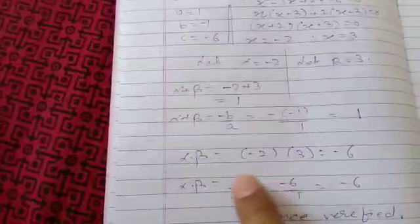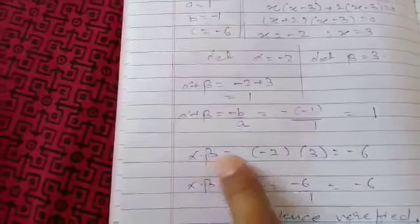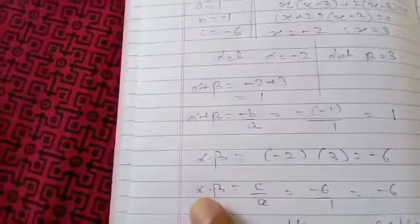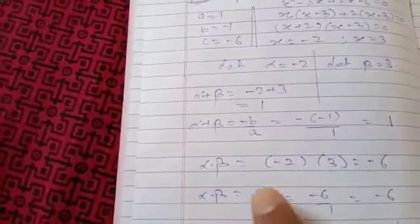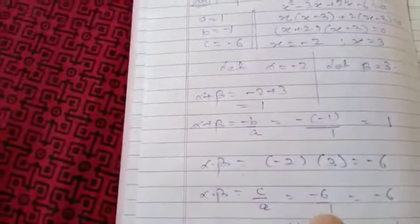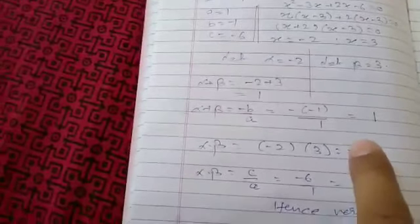Similarly, we can find product of zeros. Alpha into beta, that is -2 × 3 = -6. And also we know that alpha into beta equals c/a. So put the respective value, we will get -6. So in both cases the answer is same.